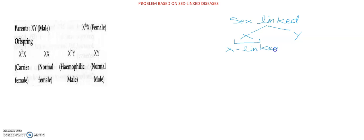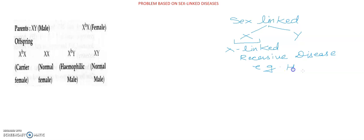As I told you earlier, X-linked recessive disease problems will come from hemophilia and color blindness. You can write here: X-linked recessive disease examples — that is hemophilia and color blindness.